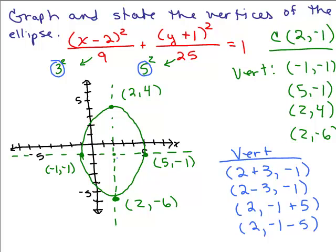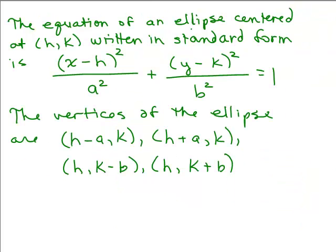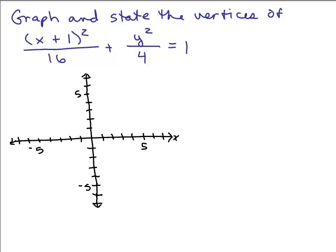So if you wanted to write it out using a formula, it's a little more complicated. It's easier really just to graph it and then look and see where it goes through those axes. But of course we could write this out algebraically as well. So here it is in general, the equation of an ellipse centered at (h,k) written in standard form, and the vertices, if you want to think about it algebraically, are written as I have right here.